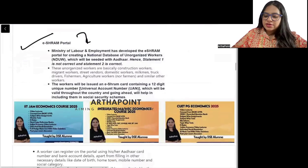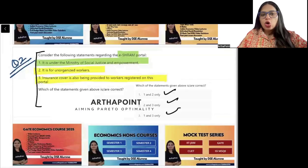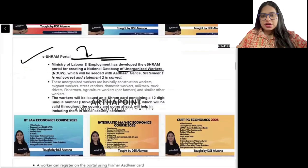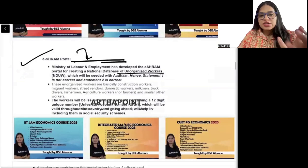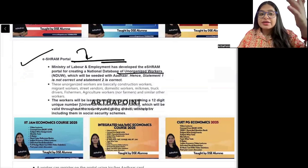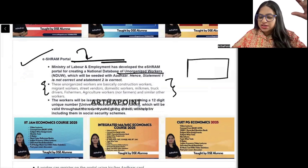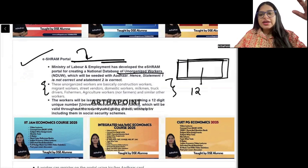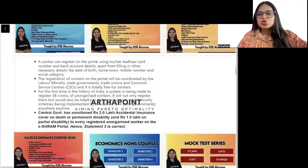The ESHRM portal is given by the Ministry of Labour and Employment — not by the Ministry of Social Justice and Empowerment. So statement 1 is incorrect. It is for unorganized workers — that is correct. These unorganized workers include construction workers, migrant workers, street vendors, domestic workers, milkmen, truck drivers, fishermen, and more. They are given an ESHRM card, similar to an Aadhaar card, with a 12-digit number. This helps them access different social security schemes.